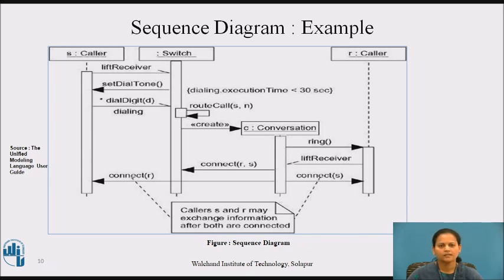In turn, the switch calls set dial tone on the caller and the caller iterates on the message dial digit. Note that this message has a timing mark, dialling, that is used in a timing constraint, that is its execution time must be less than 30 seconds.